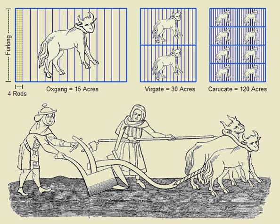Statutory values for the acre were enacted in England, and subsequently the United Kingdom, by acts of Edward I, Edward III, Henry VIII, George IV, and Queen Victoria. The British Weights and Measures Act of 1878 defined it as containing 4,840 square yards. Historically, the size of farms and landed estates in the United Kingdom was usually expressed in acres, roods, and perches, even if the number of acres was so large that it might conveniently have been expressed in square miles.